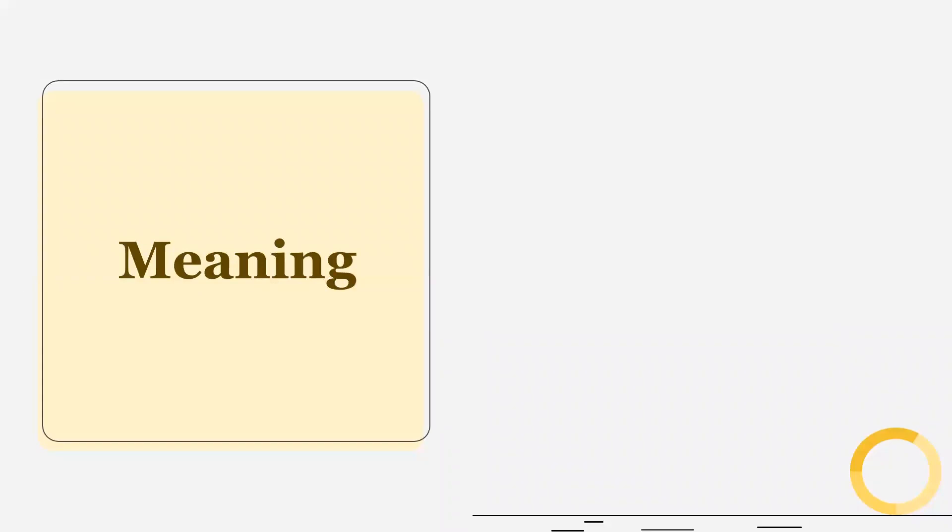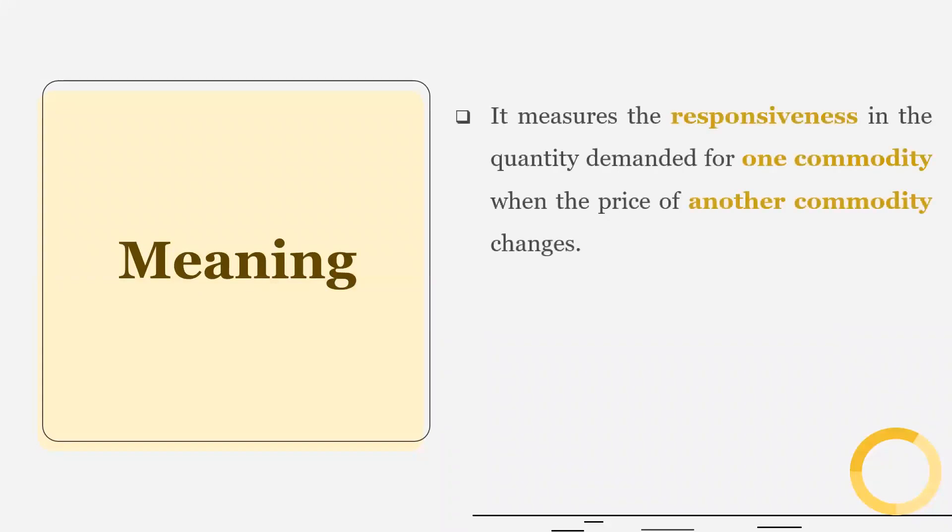So what do we mean by cross elasticity of demand? The cross elasticity of demand measures the responsiveness in the quantity demanded for one commodity when the price of another commodity changes. So therefore cross elasticity of demand is equal to percentage change in quantity X upon percentage change in price of Y. So it measures the responsiveness in the quantity demanded for commodity X when the price of commodity Y changes. And this is the formula by which we can calculate the cross elasticity of demand.